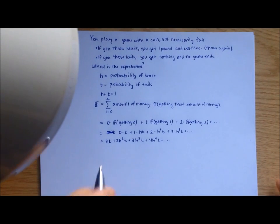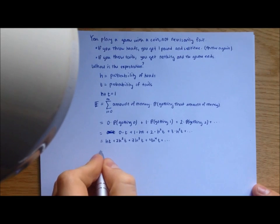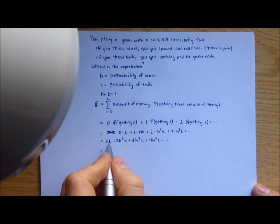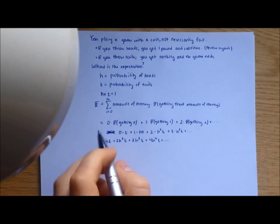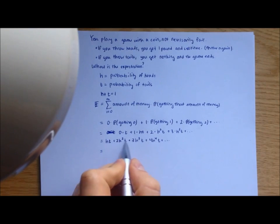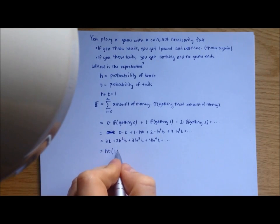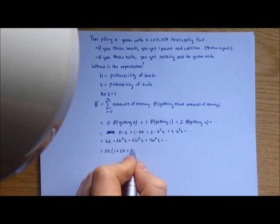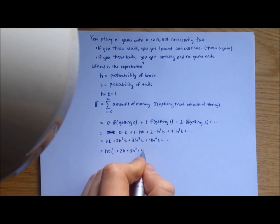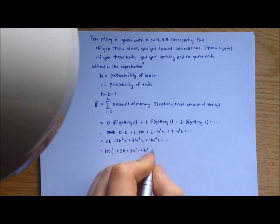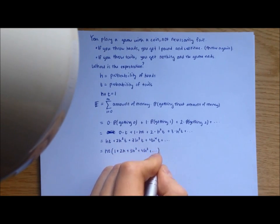So how do you approach this? Well, first, you can try to factor something out. So let's see, is there a common term here? There's an h in all these terms, and there's a t as well. So if I factor out an ht, I get 1 plus 2h plus 3h squared plus 4h cubed, and this continues forever. This doesn't really help you that much because this is still a sum of the form I said before.